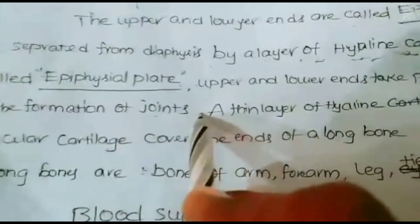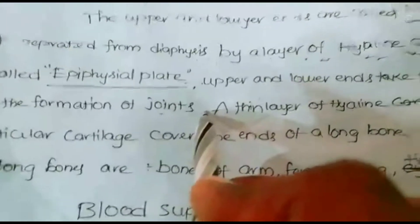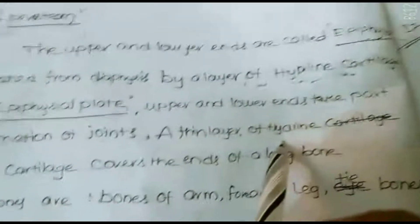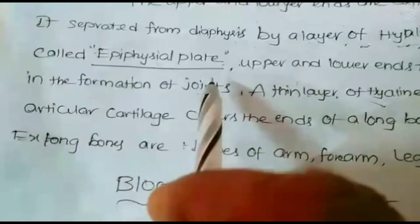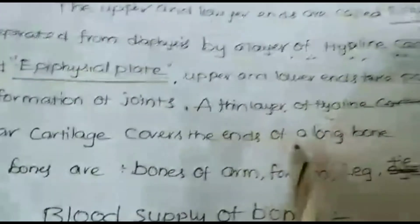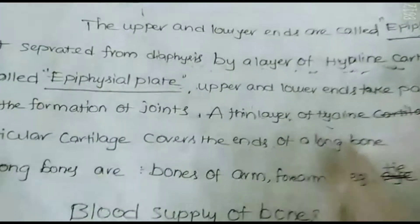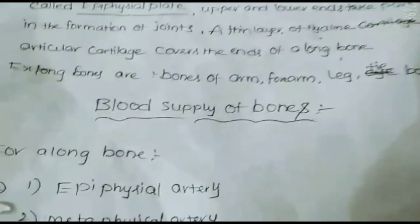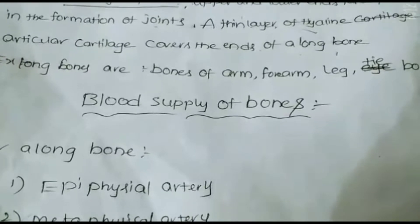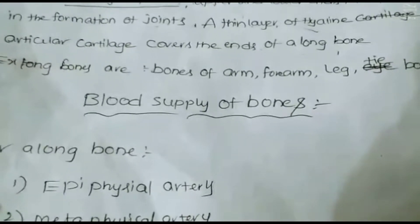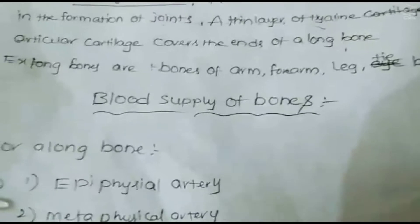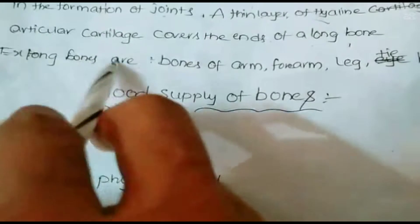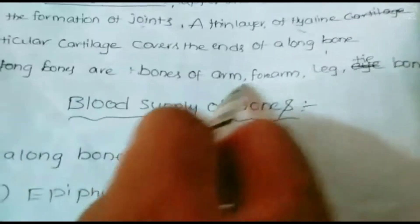The upper and lower parts mainly help in the formation of joints between two bones. A thin layer of hyaline articular cartilage covers the ends of the long bone. Examples of long bones include bones of the arms, forearm, leg, and thigh bones.